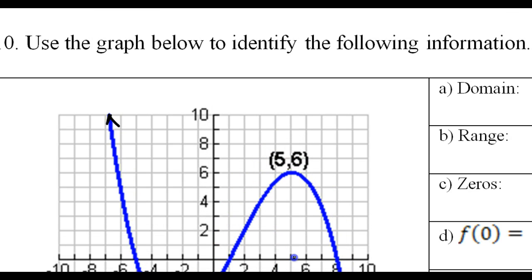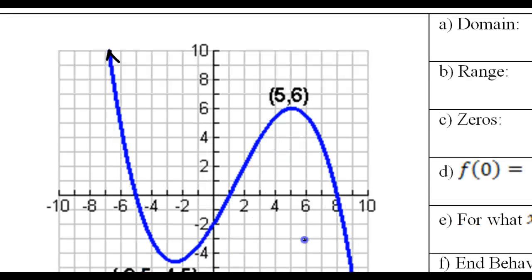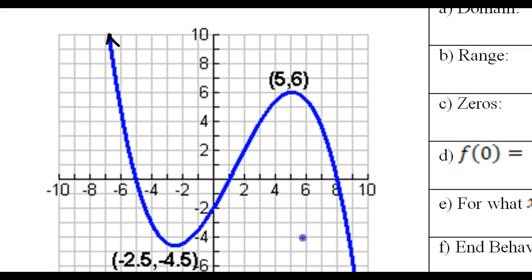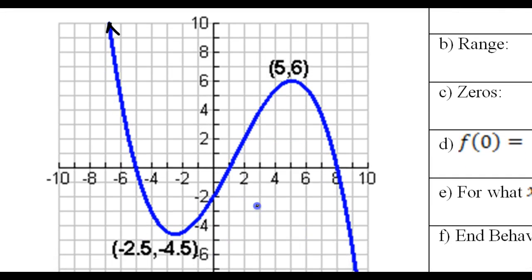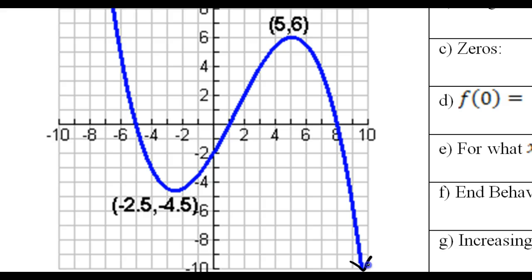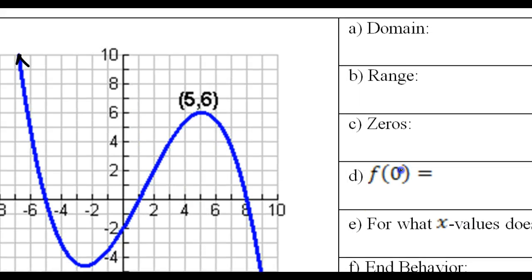Let's start with the domain. The domain is x values, and this graph goes to the left forever and it goes to the right forever. So the domain is going to be negative infinity to positive infinity.